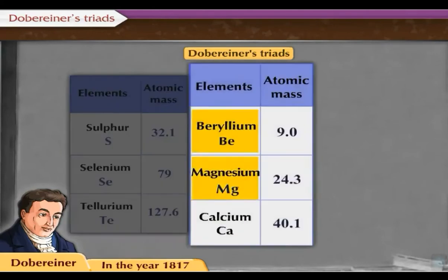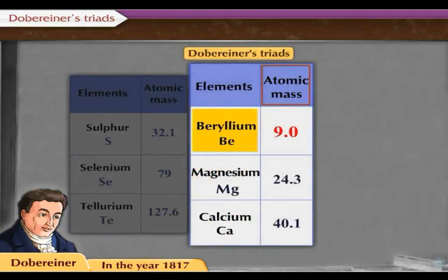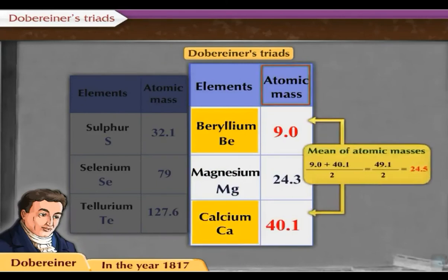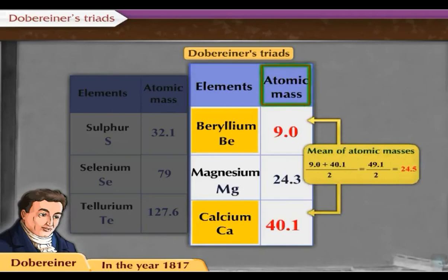Beryllium, magnesium, and calcium also form a triad. The atomic mass of beryllium is 9.0 and the atomic mass of calcium is 40.1. Their mean value is 24.5, which is equal to the atomic mass of magnesium, which is 24.3.